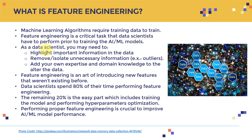As a data scientist, you may need to first highlight important information in the data, remove and isolate unnecessary information. For example, if you find some outliers in the data, you need to get rid of them. As well, you need to add your own knowledge and expertise to alter the data appropriately.